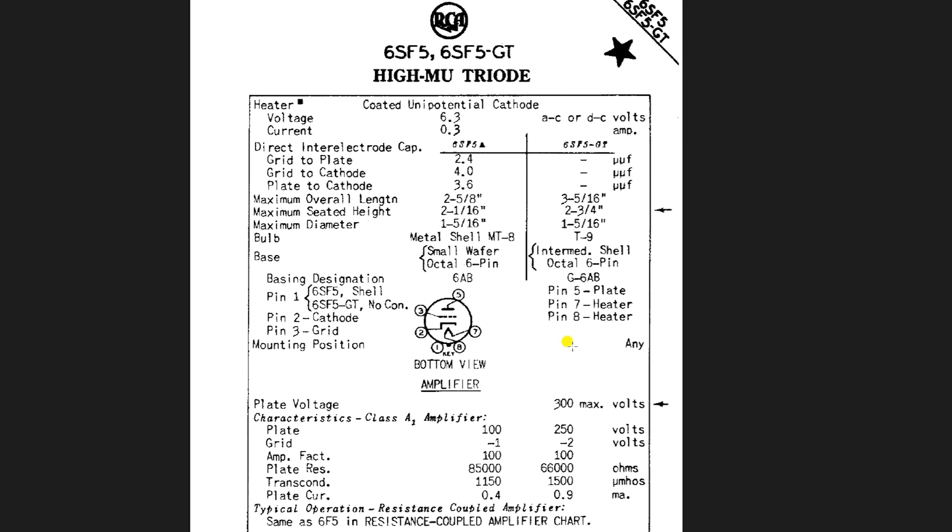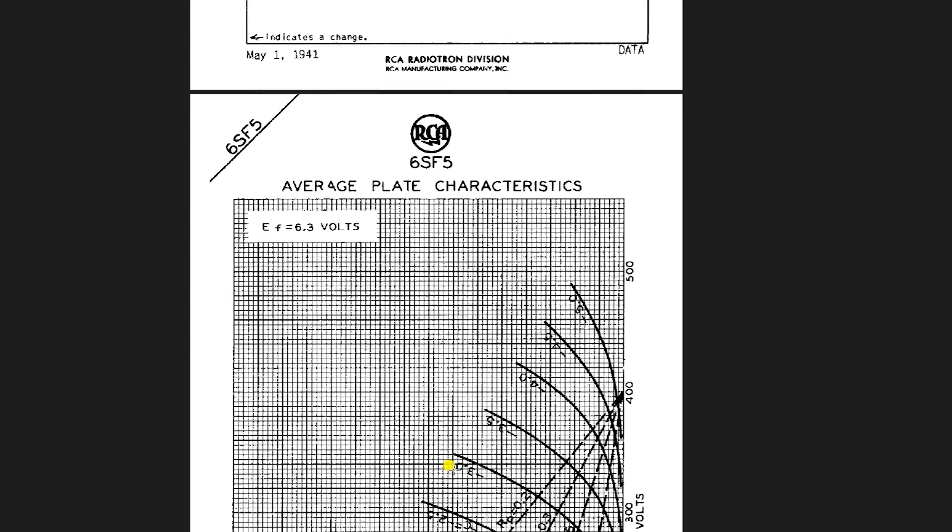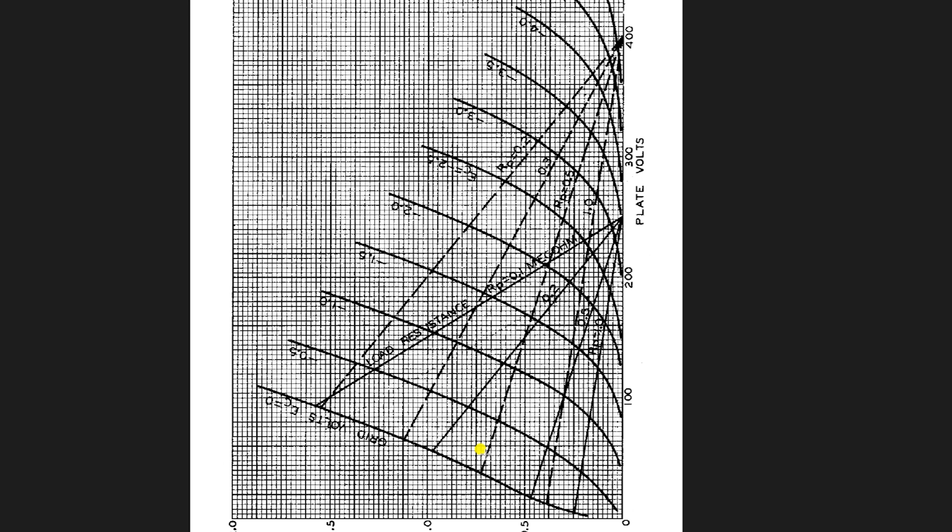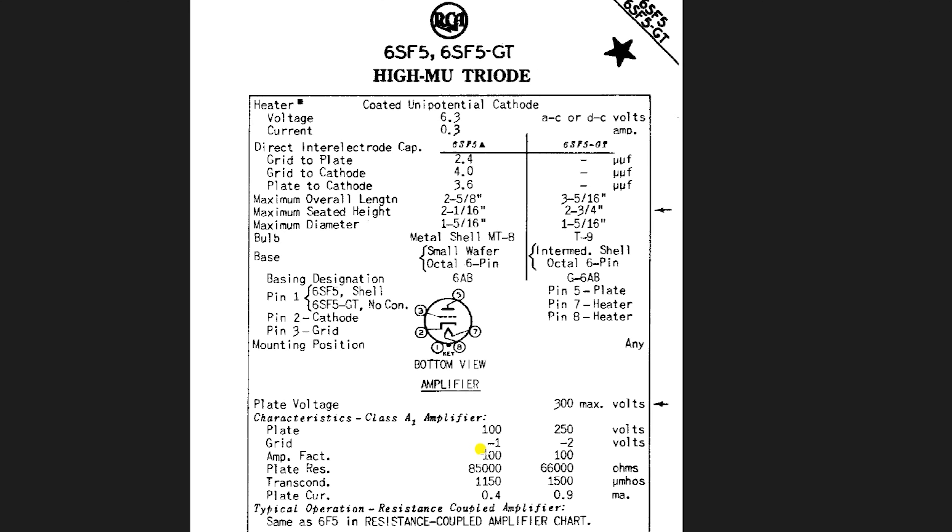Now, another option, if you want to play around with it, would be to use the 6SQ7 like I used in my EL34 amp. That's another tube with an amplification factor of 100. It's got like an extra diode in here that we don't use. And later I'll show you how you would wire one of those up. And that's another thing you could play with if you wanted to. So you can either use this 6SF5, which I do have a couple of these in my tube stash. So I'm going to be using those. But if you wanted to use a 6SQ7, you could do that too.